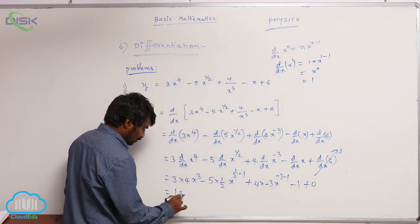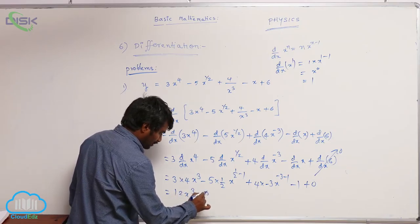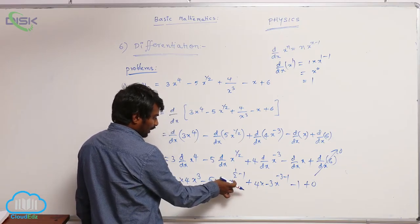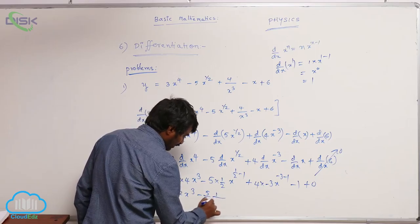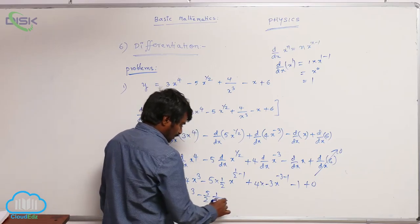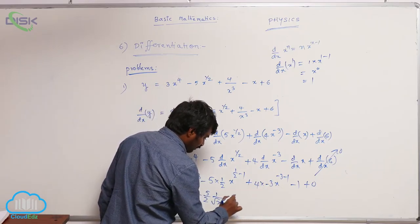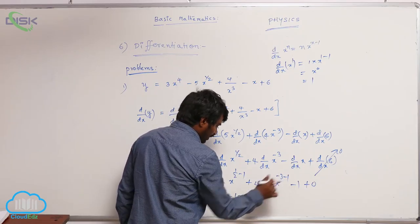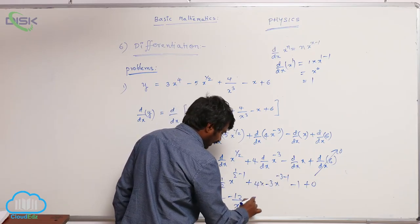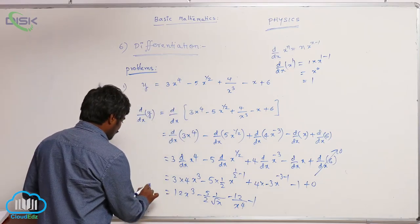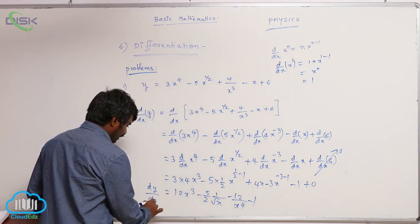What you are going to get? 12x^3 minus (5/2)x^(-1/2), which is (5/2) by root x, plus 4 times (-3) is -12 by x^4 minus 1. This is dy/dx.